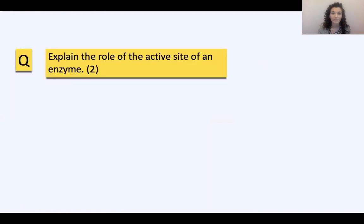Here is the first practice question, worth two marks, so you need to make two points. Explain the role of the active site of an enzyme. Pause the video now and try to write out your two-mark answer.